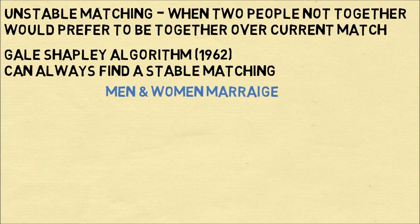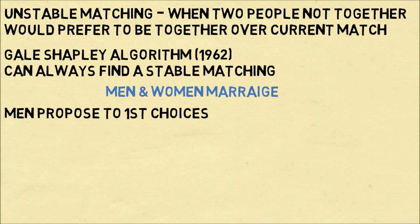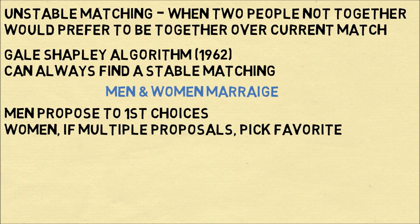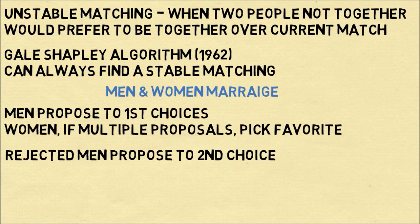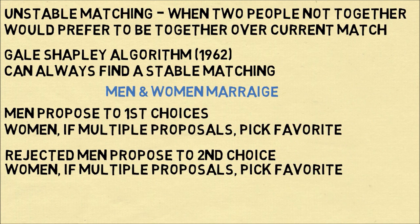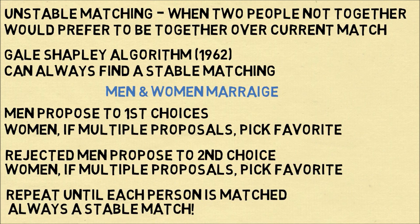Let's return to the example of men and women in marriage, which was one of the examples given in the paper. How does the Gale-Shapley algorithm work? The first step is that the men will propose to their first choices — they think about all the women who are available and each proposes to their first choice. The women, if any of them receive multiple proposals, will then pick their favorite from those choices. The men who are rejected will return to the drawing board and propose to their second choice. The women, again, if any have multiple proposals, will pick their favorite. We keep repeating that — the rejected men keep proposing to another choice, and the women keep picking their favorite — until each person is matched. And when each person is matched, this will always be a stable match.